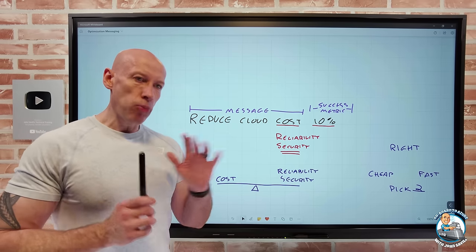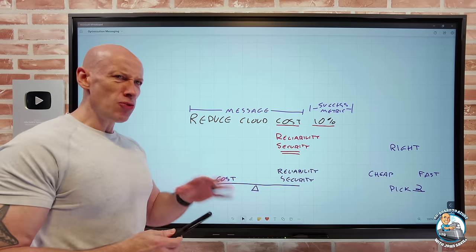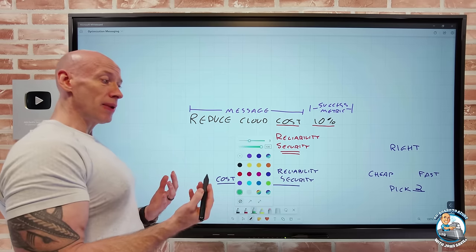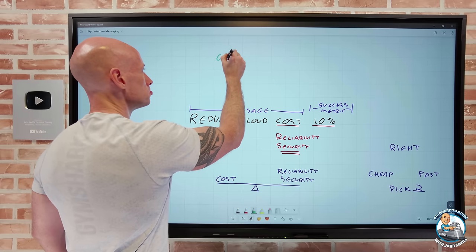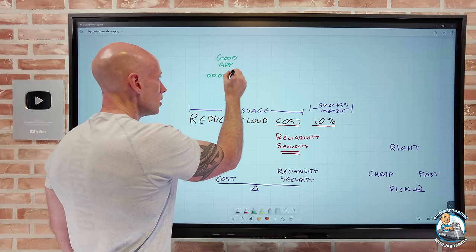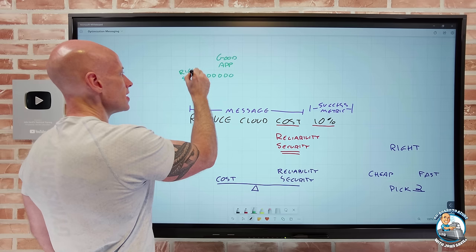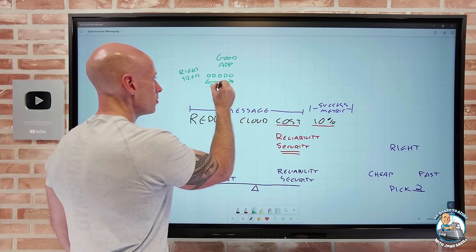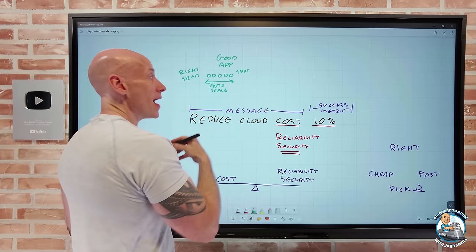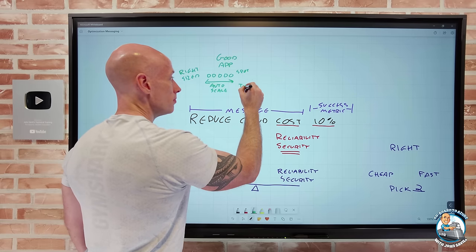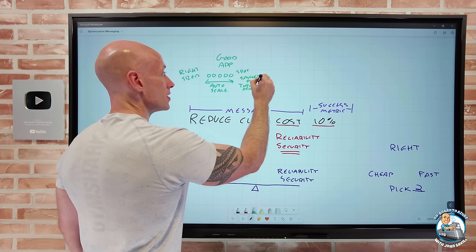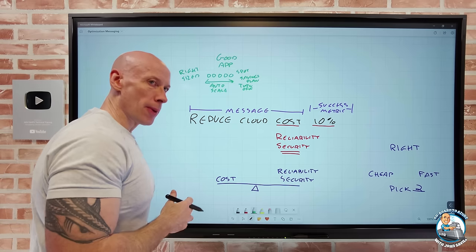And the reason it's such a problem to just have this blanket statement, everyone has to reduce cost by 10%. Imagine for a second, I'm a good application. So I'm a good app. I have done good architecture. I'm using right sized instances. I'm using auto scale. Where it makes sense, maybe I'm using spot instances. I delete things when I don't need them. I turn them off, maybe I delete them. I might use savings plan to optimize resources that I know I have a certain cost. I have optimized my environment from the get go.